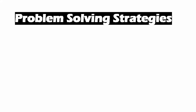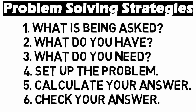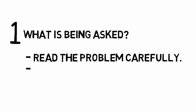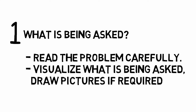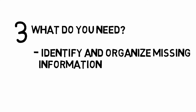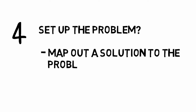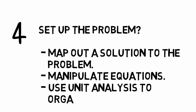There is one other tool we need to discuss before beginning chemical calculations, and that is systematic problem solving. This video presents a general six-step method. The first step is to identify what is being asked — read the problem carefully, visualize what is being asked, and sketch pictures if required. The second step is to identify and organize the given information. The third step is to identify what information is missing, find the constants and data required, and list any equations that may be needed. The fourth step is to map out how you are going to solve the problem, determine what process is required, how equations need to be manipulated, and use unit analysis to organize the solution.